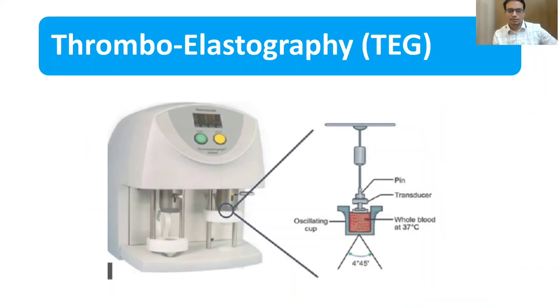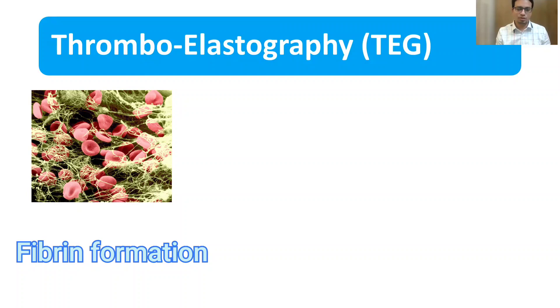TEG, otherwise known as thromboelastograph, is a whole blood point of care test that analyzes the viscoelastic properties of evolving clot in the patient's whole blood. So TEG will tell you the information about the fibrin formation, platelet activation, and clot retraction.